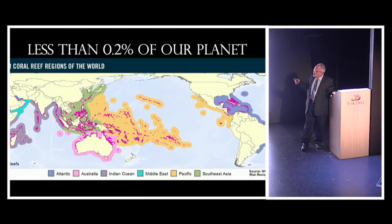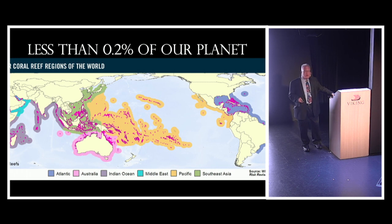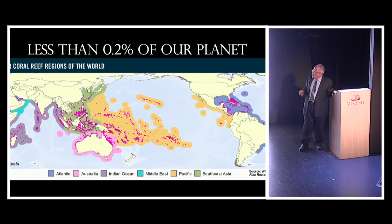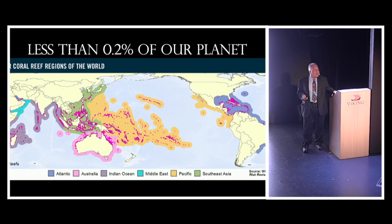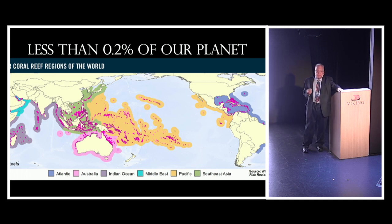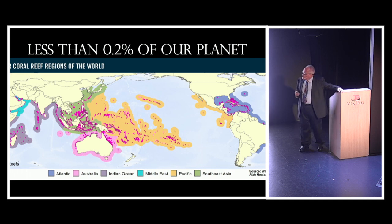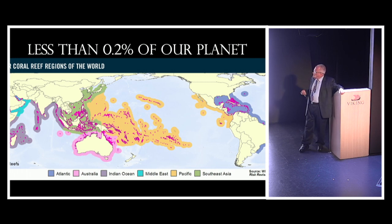This is a map showing the distribution of coral reefs in the world. Though there are very many of them all around the world, they really only occupy less than two-tenths of one percent of the planet. Yet it's occupied by these enormously rich ecosystems — the richest ecosystems in the sea, paralleled only by rainforests on the land.